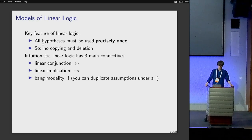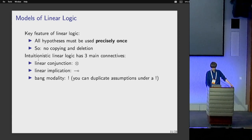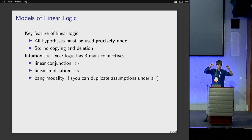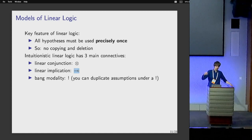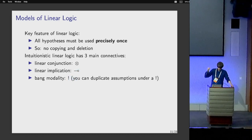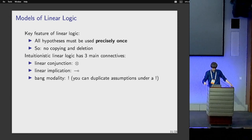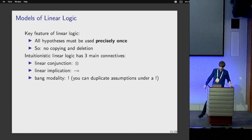When you study linear logic, you might be interested in all kinds of connectives. In this talk we focus on three main ones: a multiplicative conjunction, an implication, and the bang modality. The conjunction allows you to prove two things but you need to separate the resources. The implication is like a function space where you must use the argument precisely once. The bang modality, when you put an assumption in a bang, allows you to duplicate it.